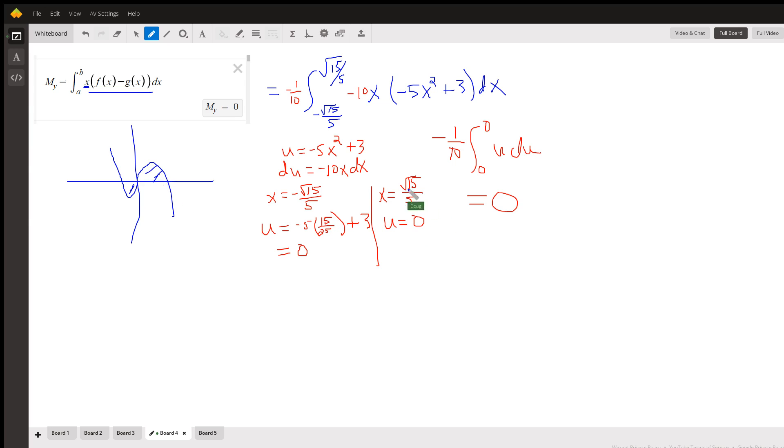That's why we get an answer of 0. If you use the substitution method, letting u equal negative 5x squared plus 3 and substitute for these limits of integration, they both equate to 0, so you're finding the definite integral from 0 to 0, and that's just 0.